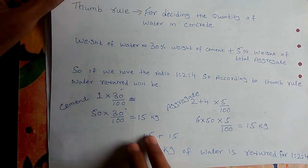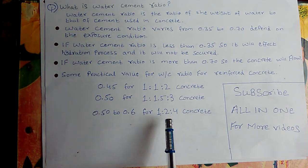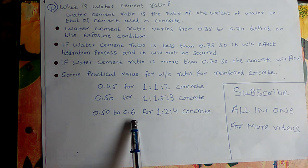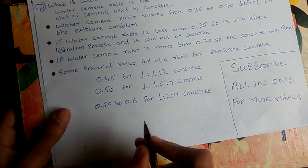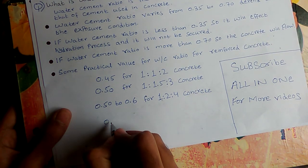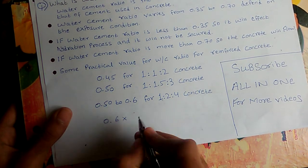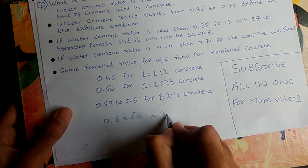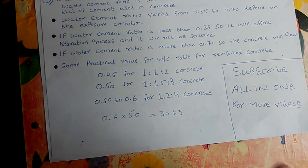We can verify this using the previously stated values. For a 1:2:4 mix, the given water cement ratio range is 0.50 to 0.60. Using 0.60 × 50 kg cement = 30 kg, which gives the same result as the thumb rule calculation.